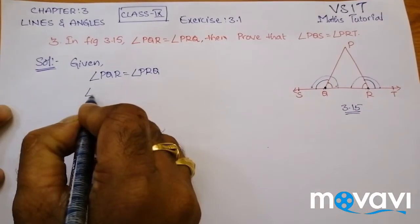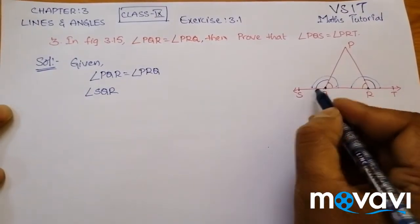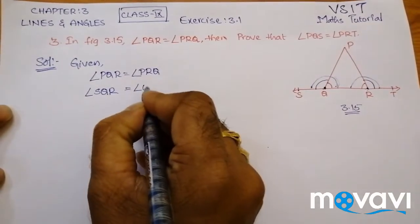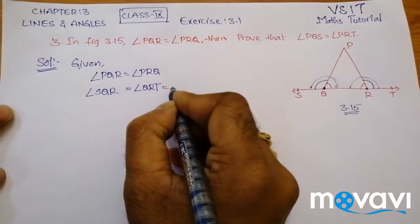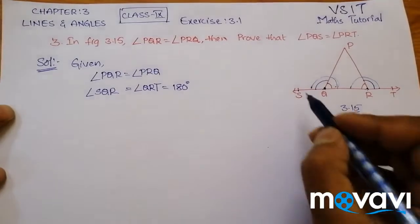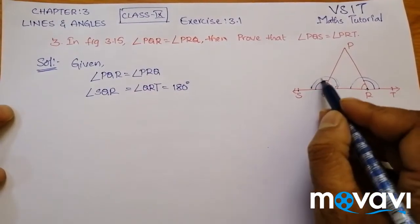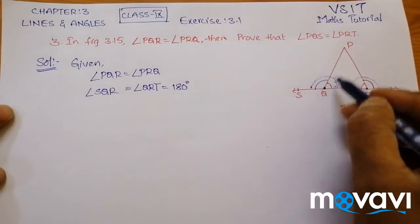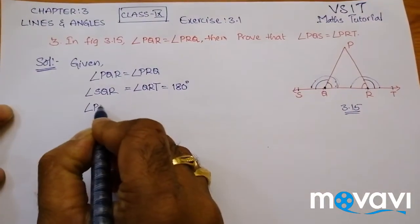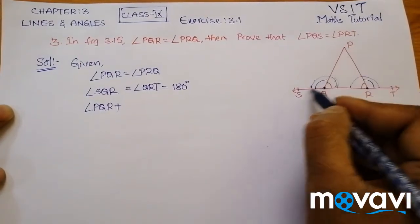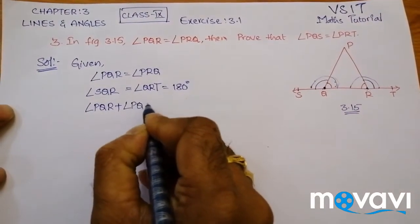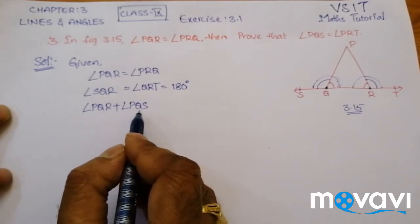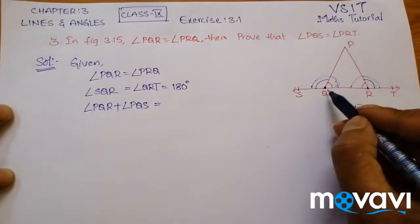Now let's write this: angle SQR equals angle QRT, and both are equal to 180 degrees. Now, what is angle SQR? It is the sum of angle PQR plus angle PQS. So angle SQR equals angle PQR plus angle PQS, which is equal to angle QRT.